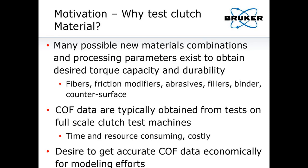Many possible new material combinations and processing parameters exist to obtain the desired torque capability and durability. We can change fibers, friction modifiers, abrasives, fillers, binders, and the counter surface — all system components that make up our tribological system. Coefficient of friction data are typically obtained from full-scale clutch test machines, which are time, resource, and cost intensive. We'd like to still get accurate COF data economically for modeling efforts.